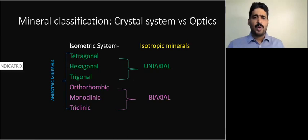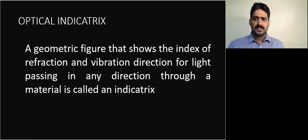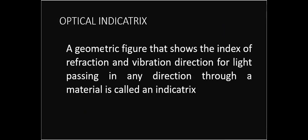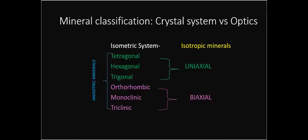Now let's see what an optical indicatrix is. The optical indicatrix is a geometric figure that shows the index of refraction and vibration direction for light passing in any direction through a material. We are going to see in the next slide how the indicatrix of isotropic, uniaxial, and biaxial minerals will look.